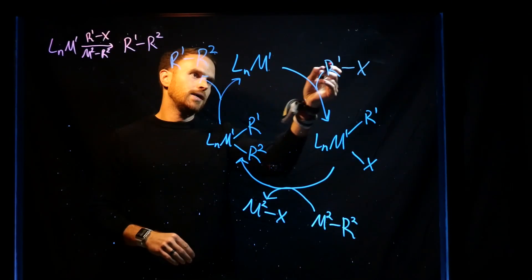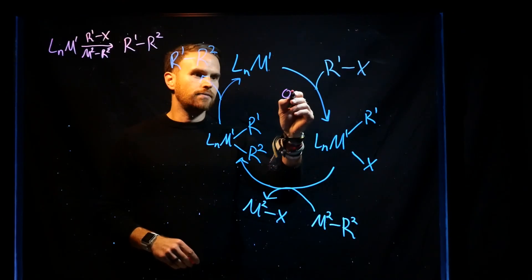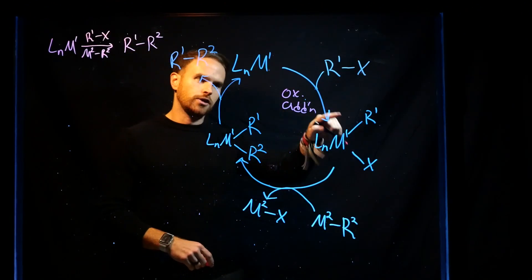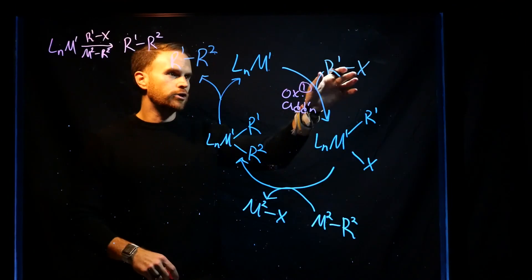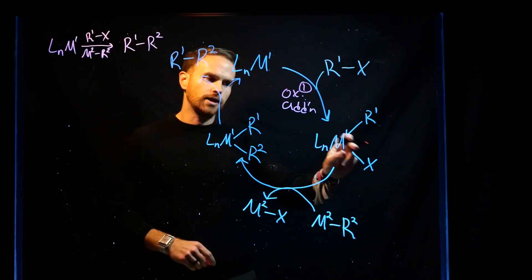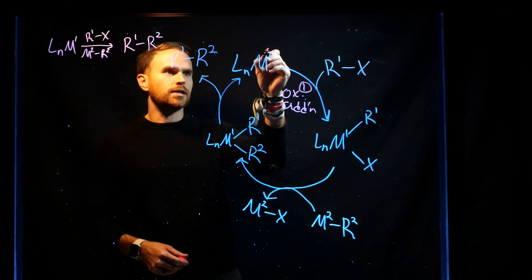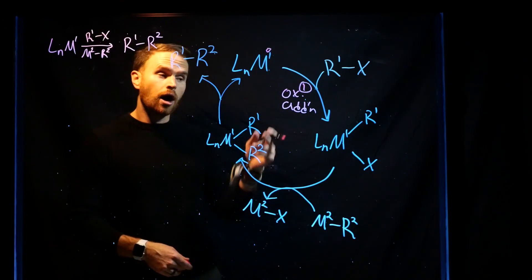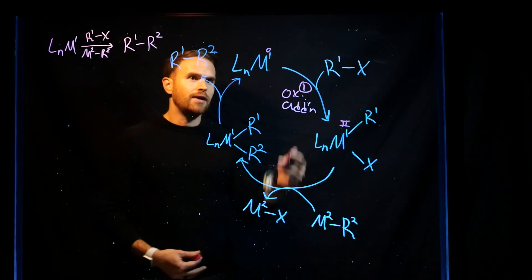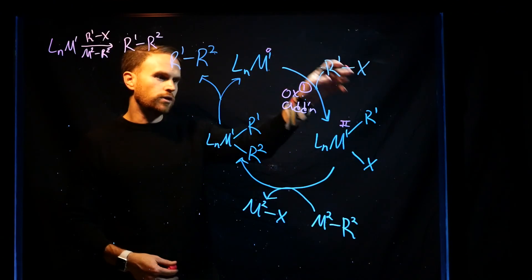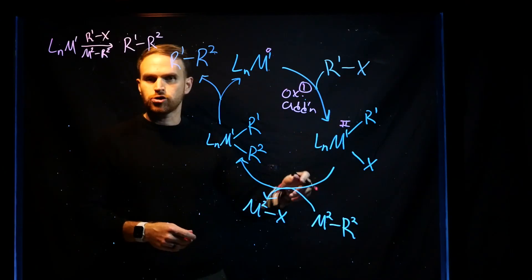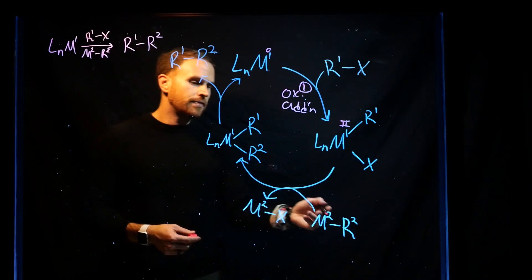The first step is oxidative addition — abbreviated ox-addn — where the metal effectively inserts into that bond, and you end up with two brand new ligands on the metal. If the oxidation state of our metal was initially zero, upon oxidative addition it becomes 2+; if it were 1, it becomes 3+; if it were 2, it becomes 4+. So the oxidation state changes by 2, and the total number of electrons also increases by 2.